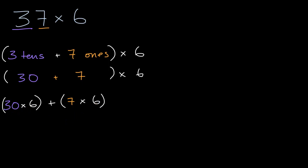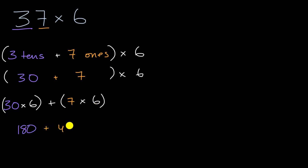And then we can figure these out. What is 30 times six? Well, three times six is 18, so three tens times six is going to be 18 tens, which is the same thing as 180. And seven times six is 42.